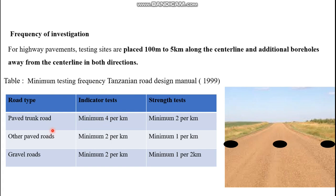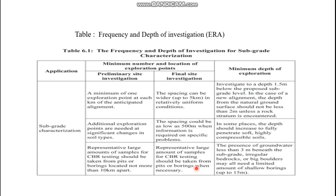For paved trunk roads, indicator tests such as gradation and Atterberg limits could be conducted at a minimum of four per kilometer; for gravel roads, two per kilometer; and strength tests at one per kilometer. In summary, the depth of investigation is typically limited to 1.5 meters, and spacing ranges from up to 5 kilometers for uniform soils to 500 meters for erratic soils.